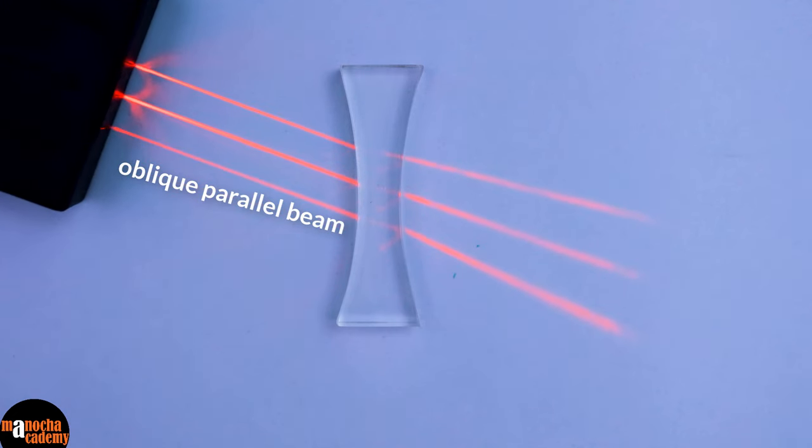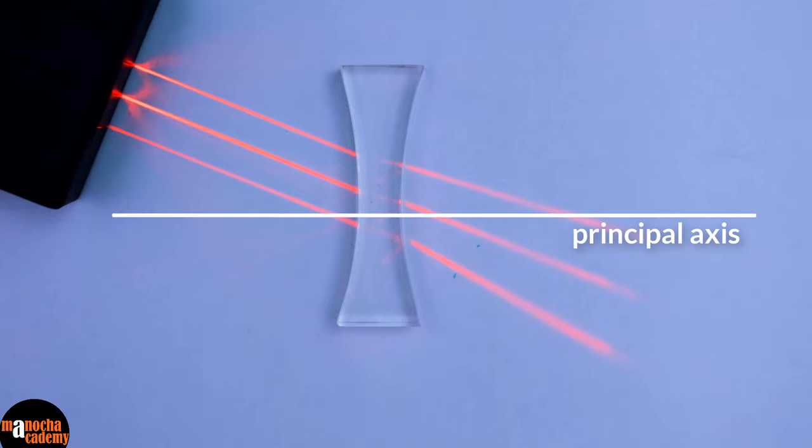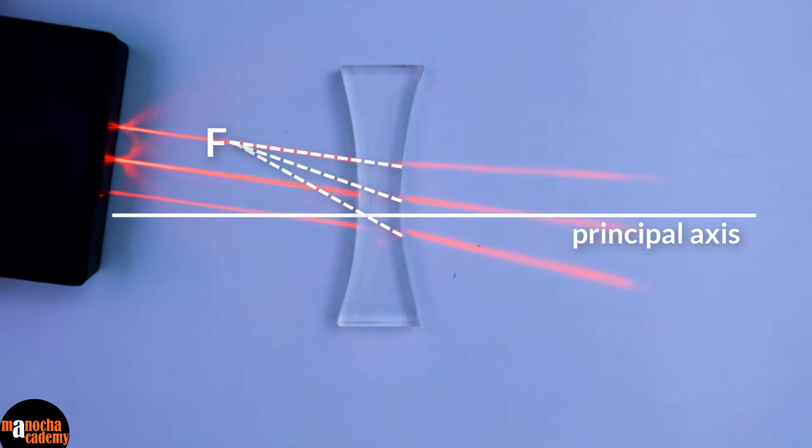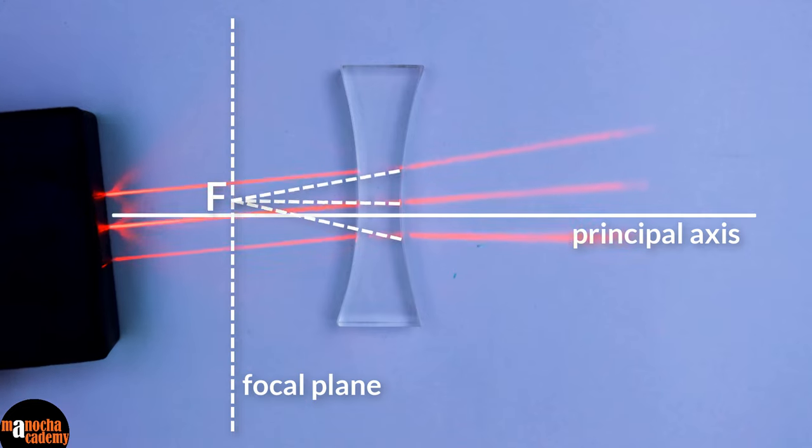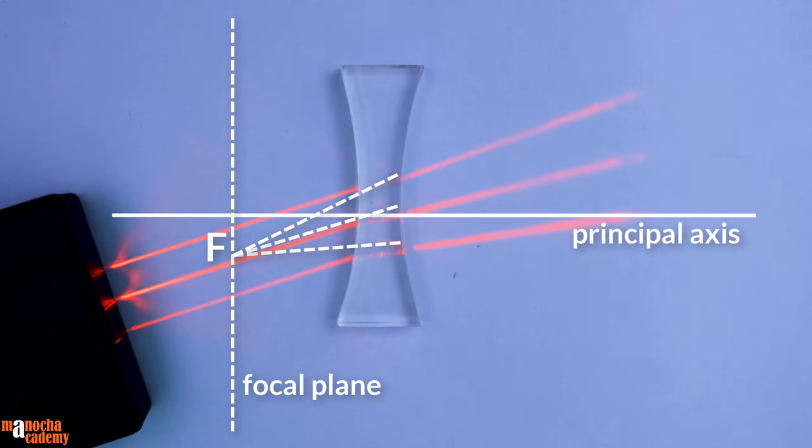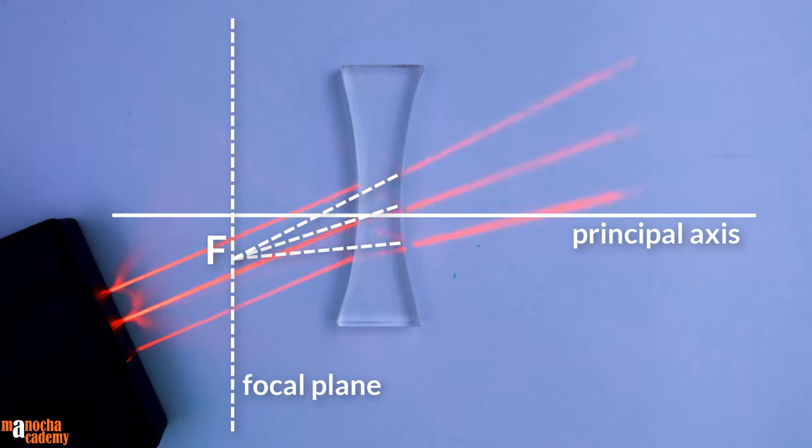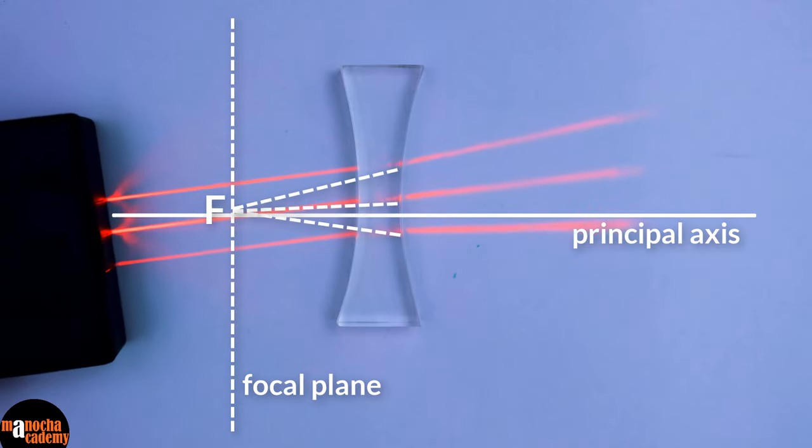Similarly, if you throw an oblique parallel beam on the concave lens, you will see that the rays diverge in such a way that when you trace them back, they will meet at a point that lies on the focal plane. But the point will be outside the principal axis but lying on a plane that passes through the focus.